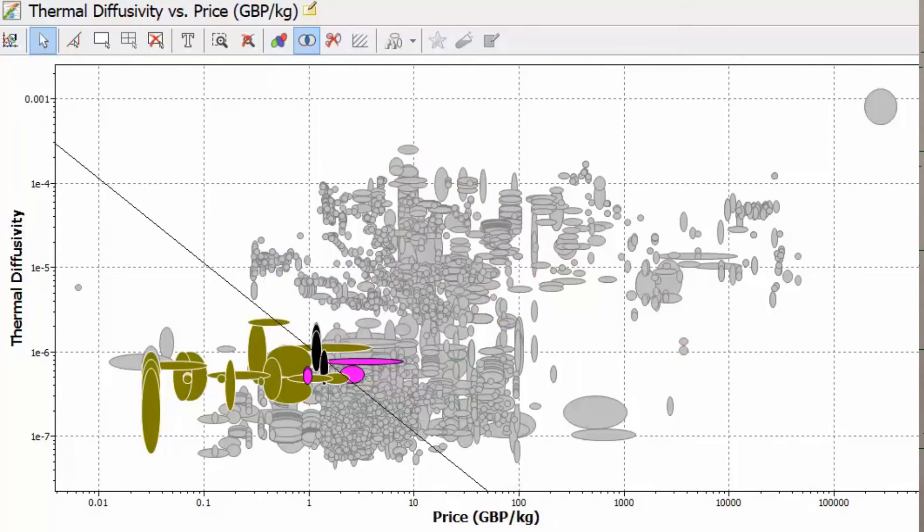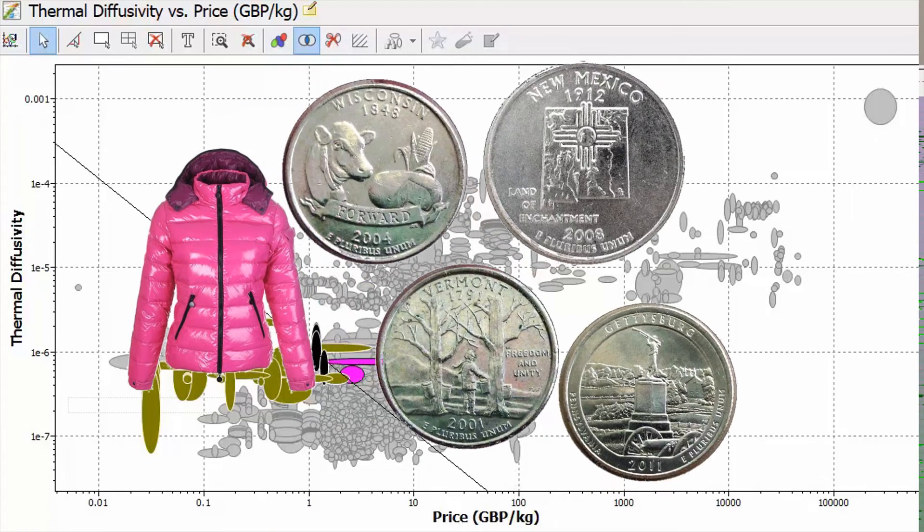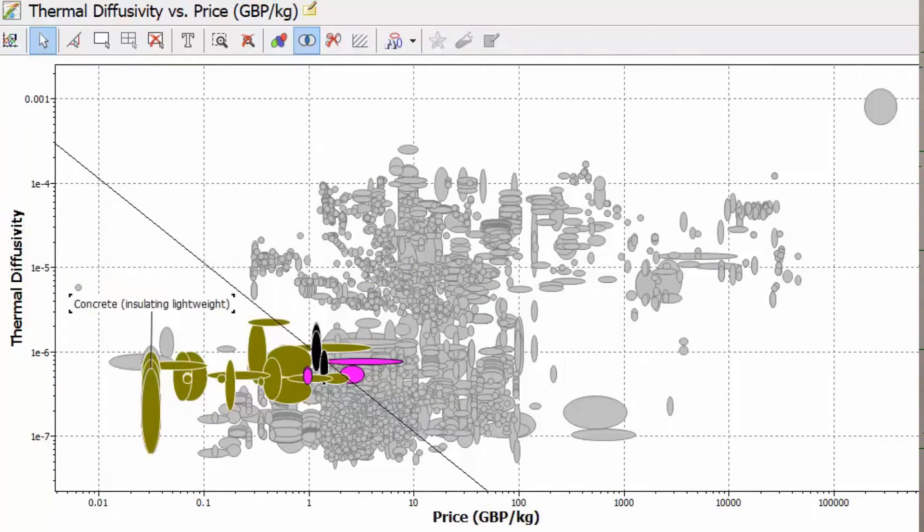Ideally situated in the bottom left-hand corner in this example, with minimum thermal diffusivity for minimum cost. All materials that lie on the line are of equal performance. In this case, the most suitable materials are ceramics.